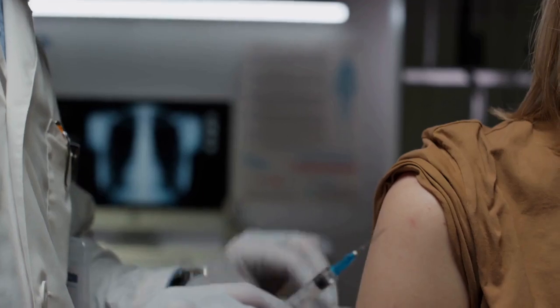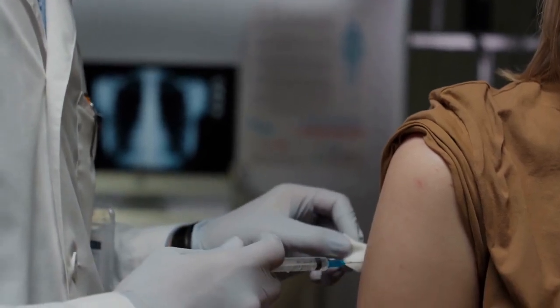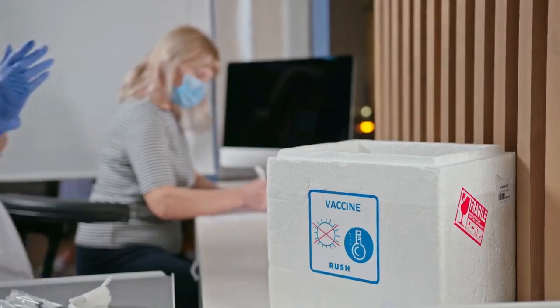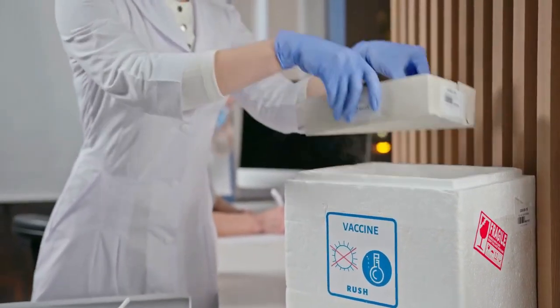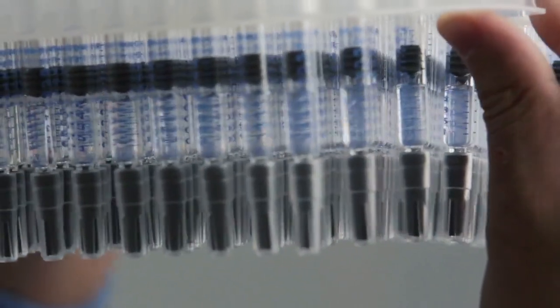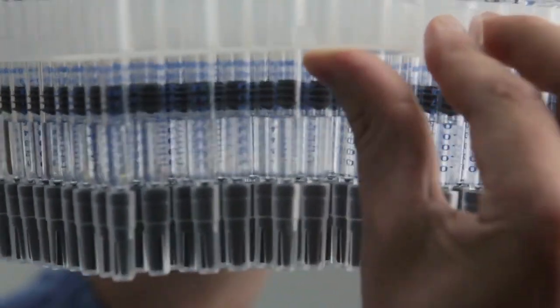Step 6: Gently mix the solution. Once the diluent is added, gently swirl the vial to dissolve the artesanate powder completely. Do not shake vigorously, as this can cause foaming or damage the medication. Make sure all the powder is dissolved before proceeding. Inspect the solution for any unusual cloudiness or particles. If present, discard the vial.